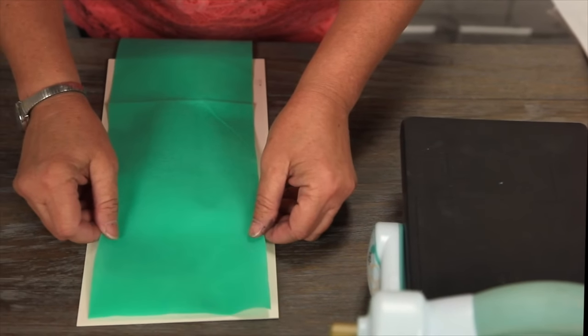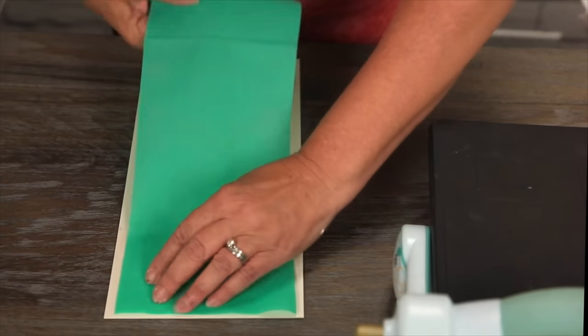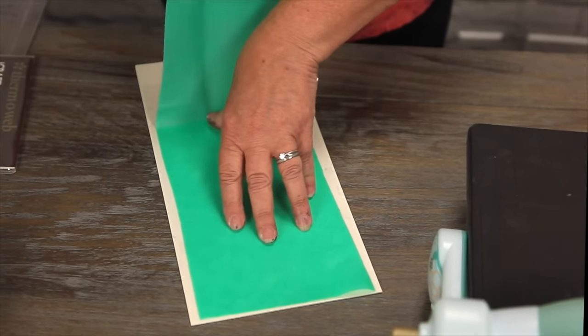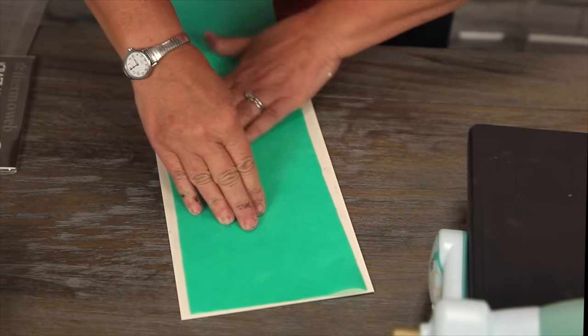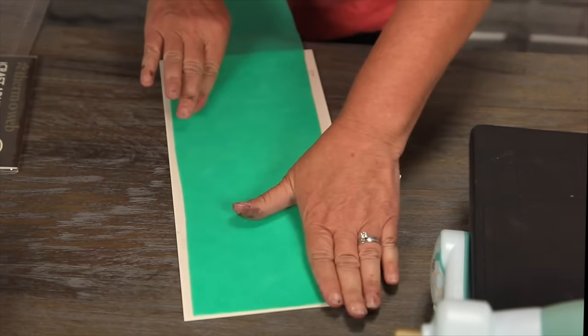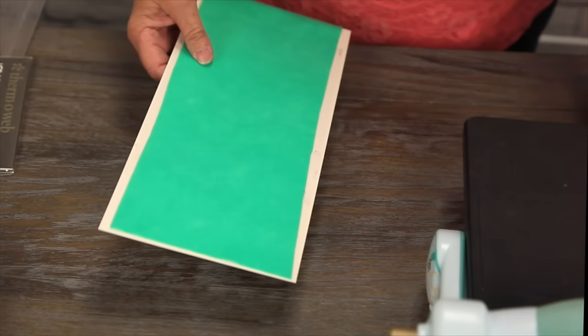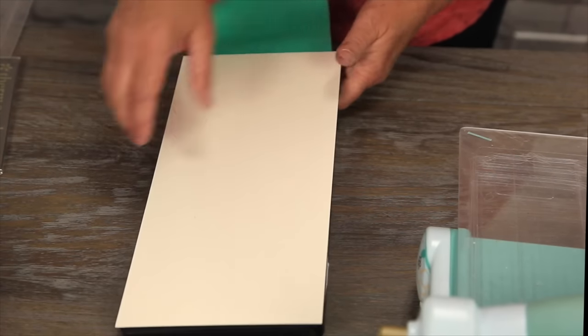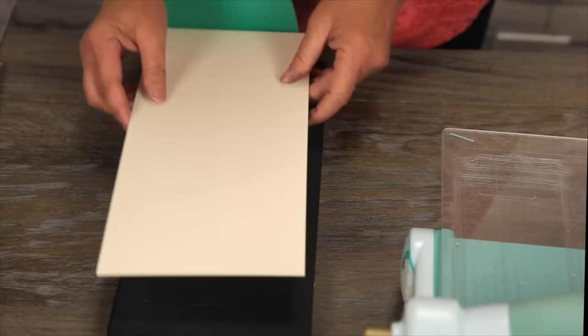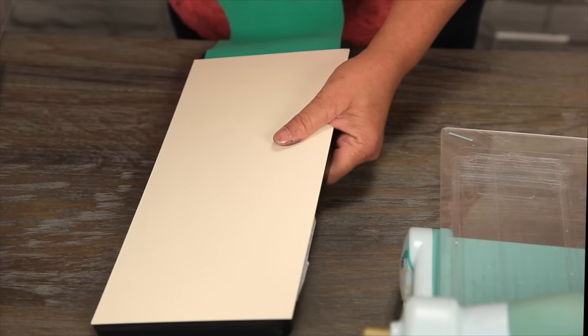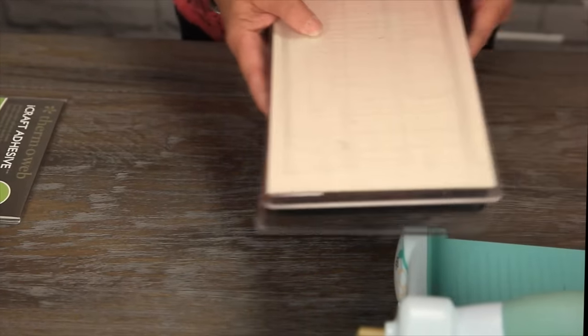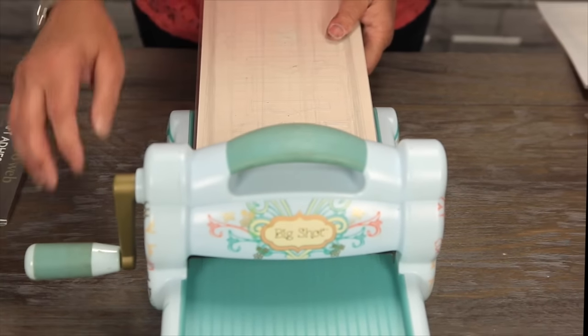Well there might be a few wrinkles but that's okay when we press it through. Basically the machine is fusing this to the mat board. We're also going to emboss it so you won't really notice. So we're going to place that on our die and we're putting this side down so that this is the side that's going to cut on the outside. Make the Sizzix Sandwich and run it through.